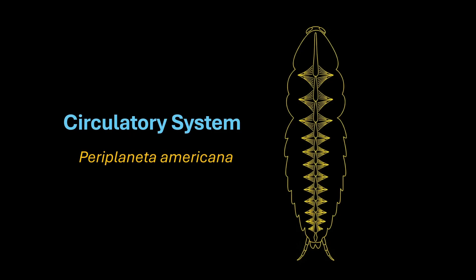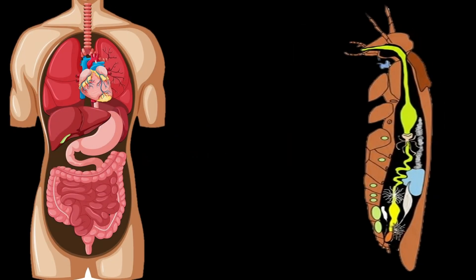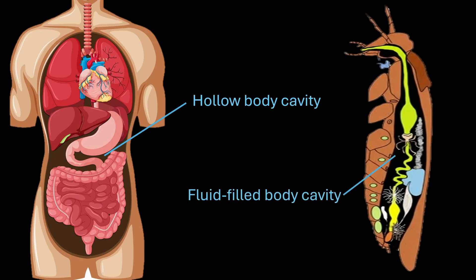So let's begin. As we learned in the previous part of this series, unlike humans, cockroaches do not have a hollow body cavity. Instead, they have a fluid-filled cavity.